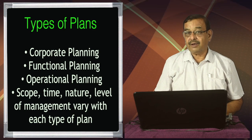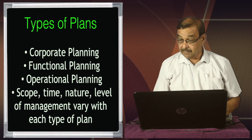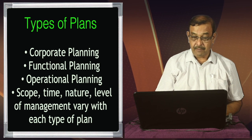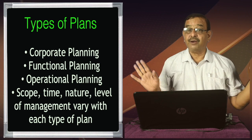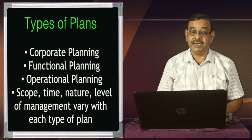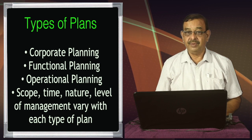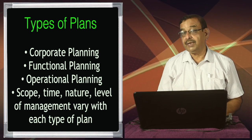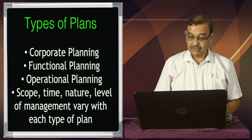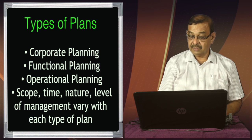Types of plans include corporate planning, functional planning, and operational planning. As discussed in part 1 of this unit, the scope, time, nature, and level of management vary with each type of plan. Corporate planning is for the entire organization. Functional planning covers specific functions like marketing, production, maintenance, materials, manpower, and financial planning. Operational plans are time-bound — quarterly, monthly, daily, or hourly plans.